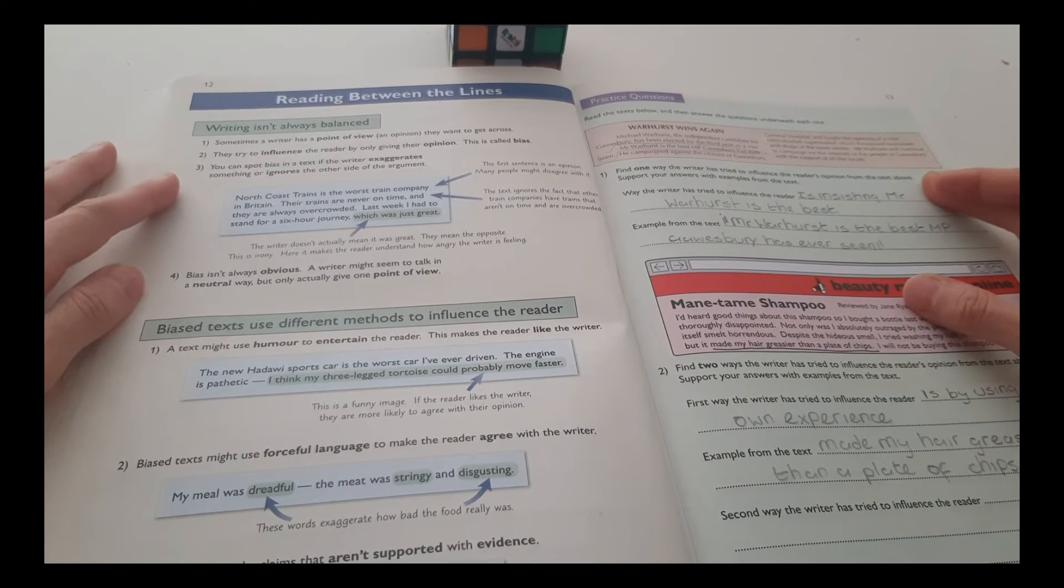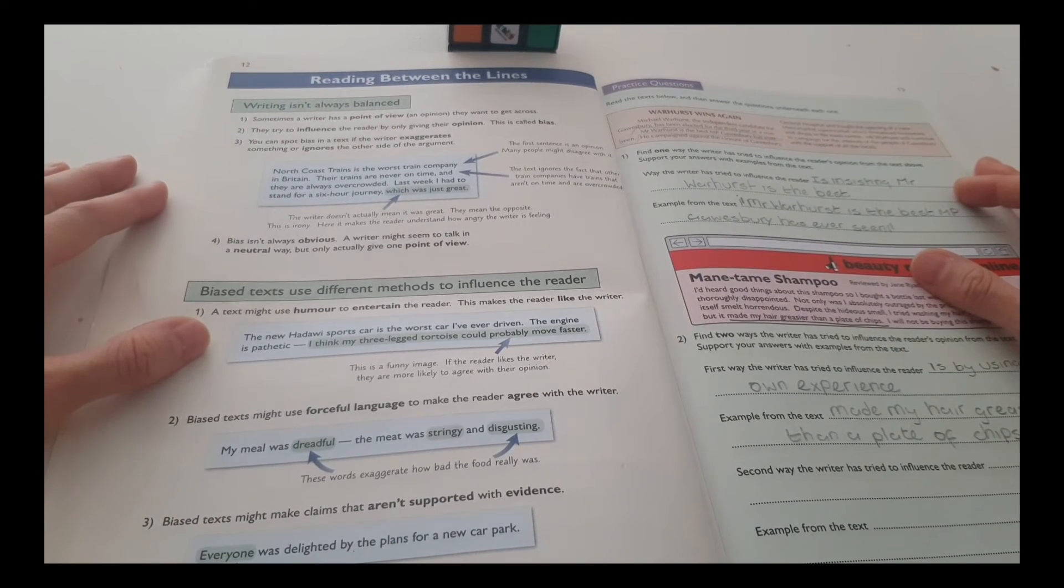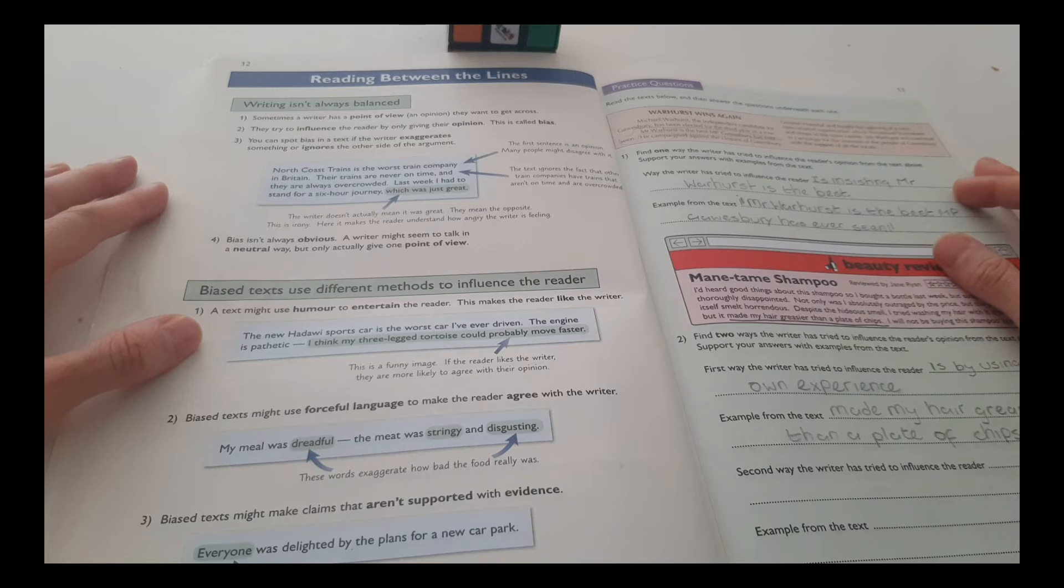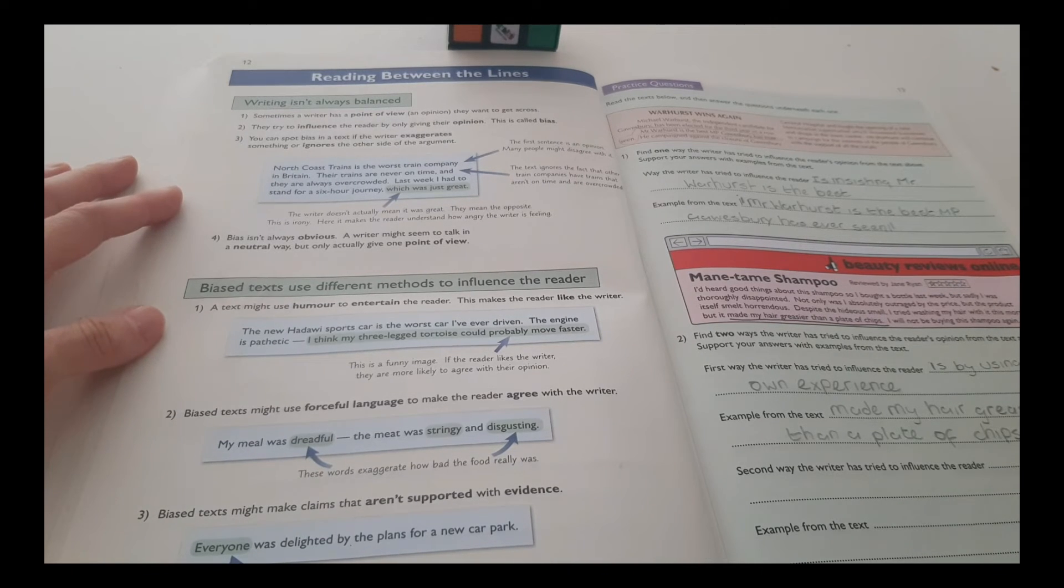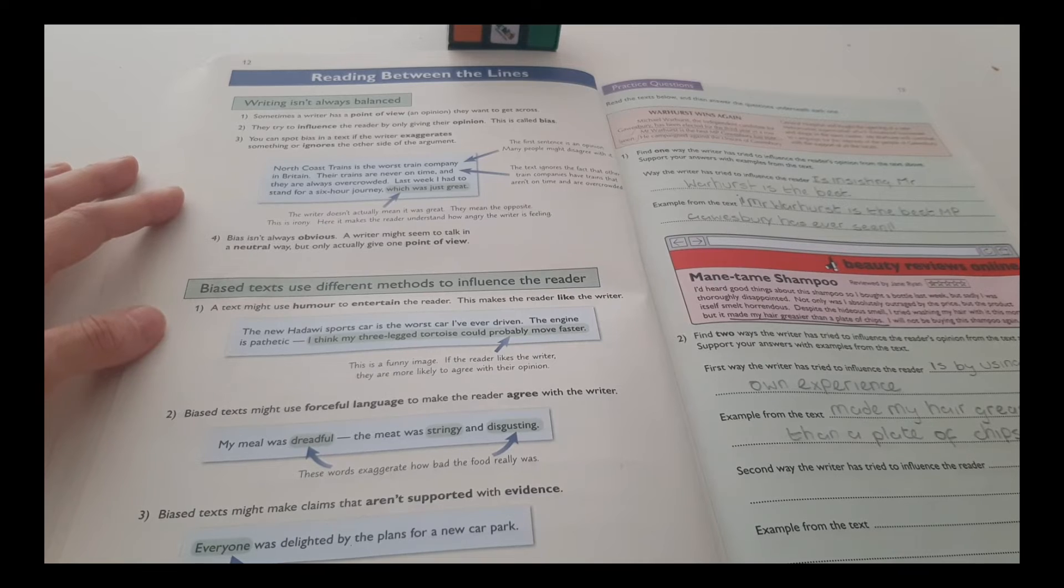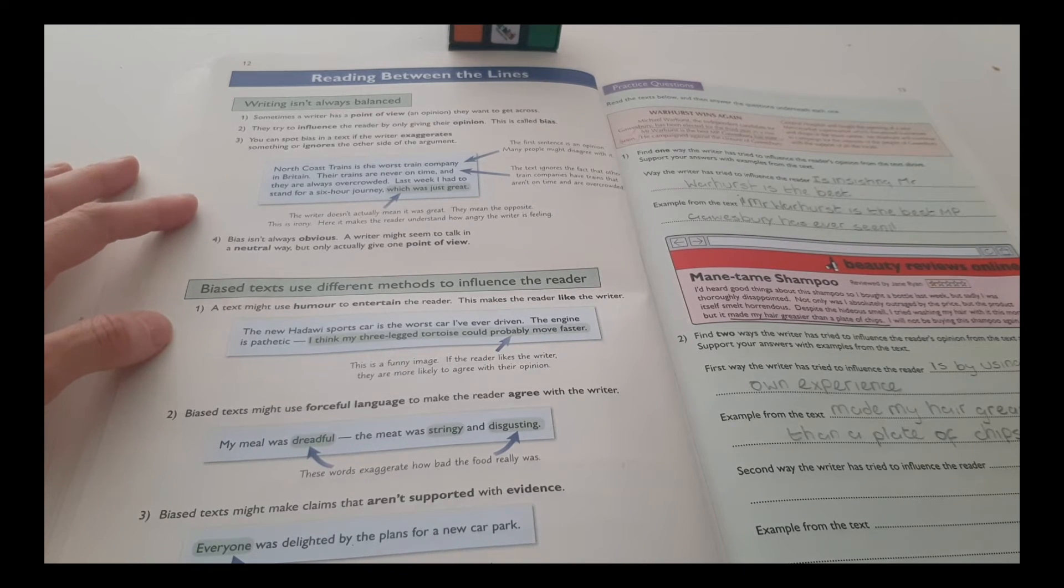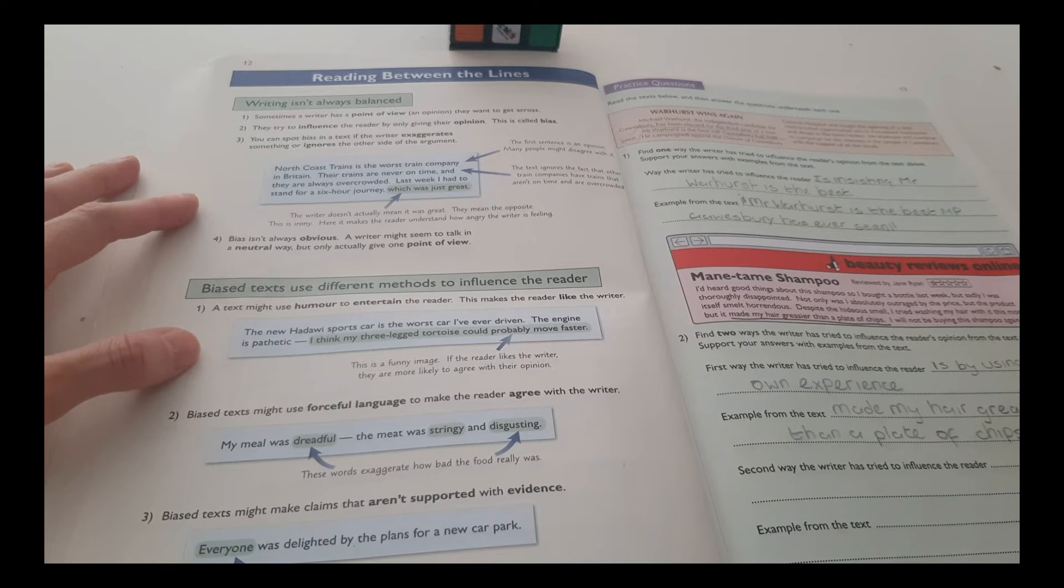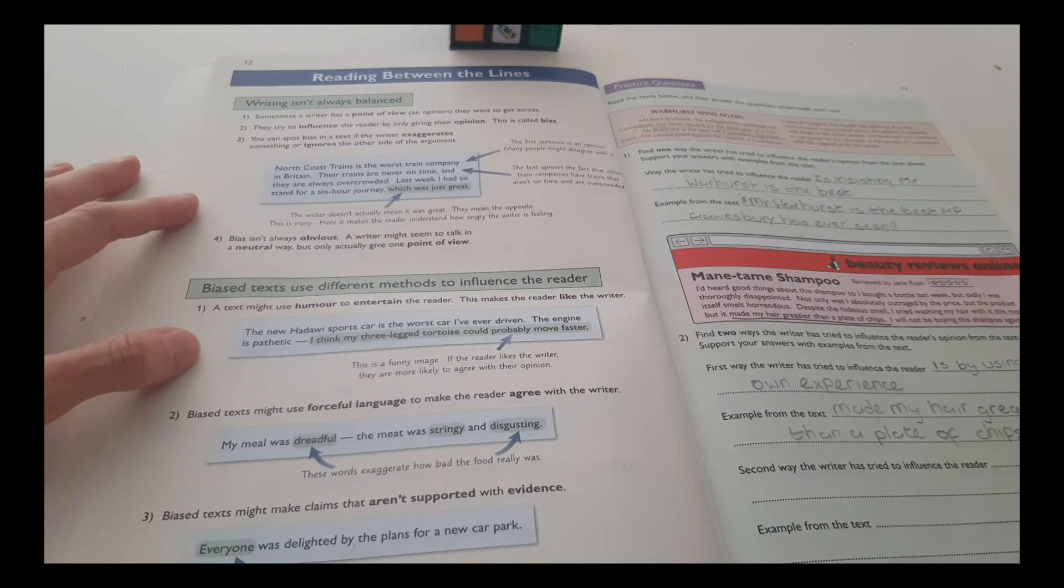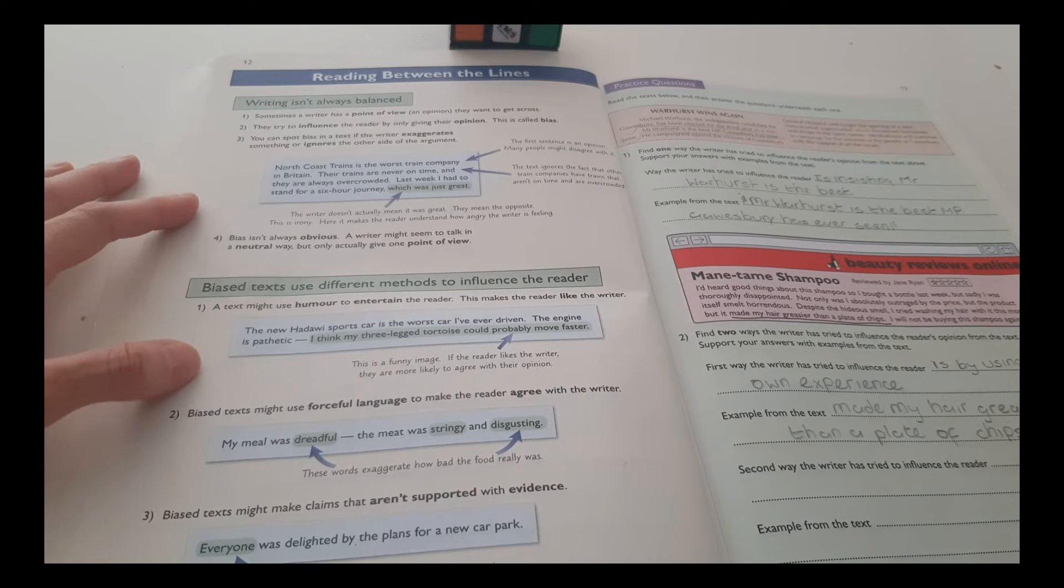Biased text uses different methods to influence the reader. A text might use humor to entertain the reader. This makes the reader like the writer. The new Hadawi sports car is the worst car I've ever driven. The engine is pathetic. I think my three-legged tortoise could probably move faster. This is a funny image. If the reader likes the writer, they are more likely to agree with their opinion.